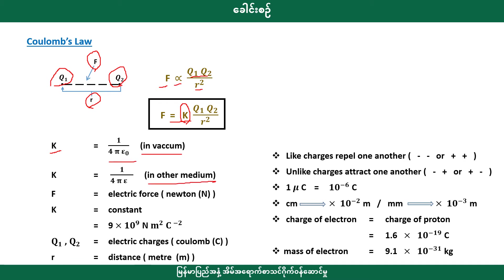We have the formula F = kq1q2/r². F is called the electric force in Newtons. k is the constant: 9 × 10⁹ Newton meter squared per Coulomb squared. We have electric charges in Coulombs and distance in meters.